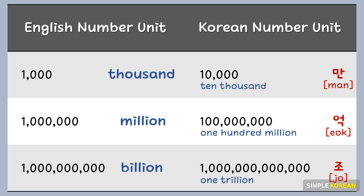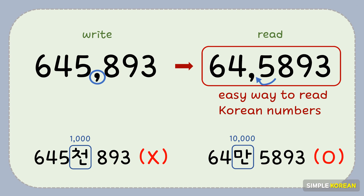Understanding the Korean number units is an easy way to read Korean numbers. These are the Korean number units: 만, 억, 조. 만 is 10,000. 억 is 100,000,000. 조 is 1 trillion. Look at this number: 645,893. The Korean number unit is different, so it has to be read in a different way. You have to understand it as 64만 5,893.